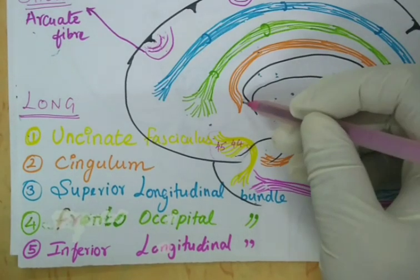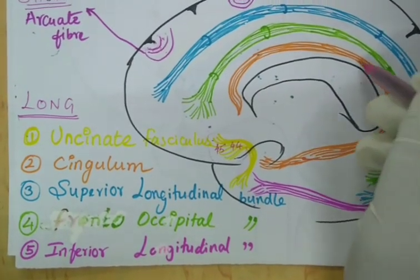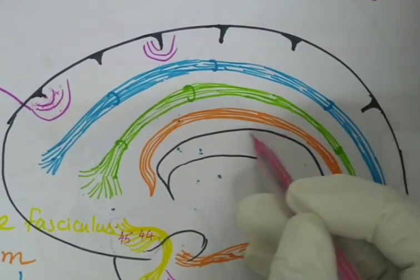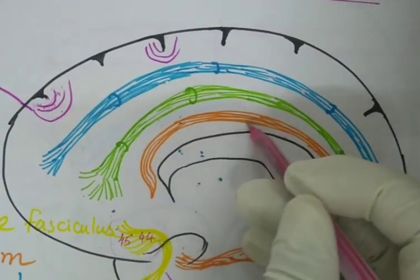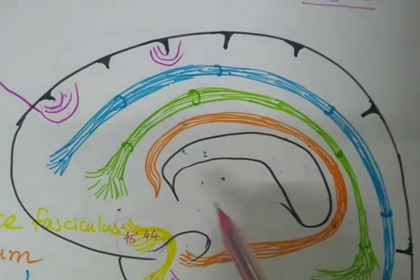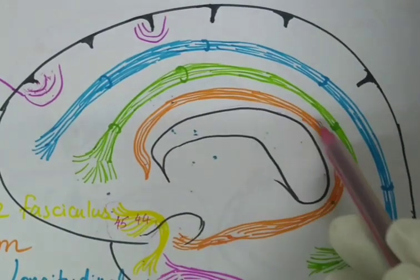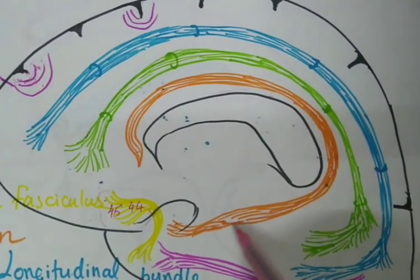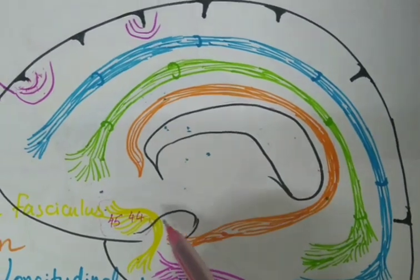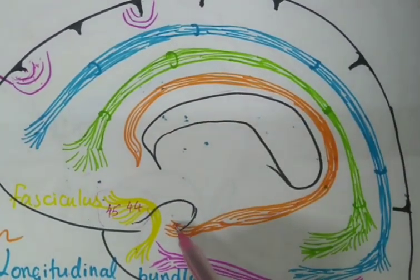The second type of long association fiber is the cingulum, shown in orange. Above the callosal sulcus, the gyrus located there is called the cingulate gyrus, and along the temporal lobe it is the parahippocampal gyrus. This cingulum is a bundle of white matter extending all around the corpus callosum, along the cingulate gyrus, and reaching up to the parahippocampal gyrus in the temporal lobe.